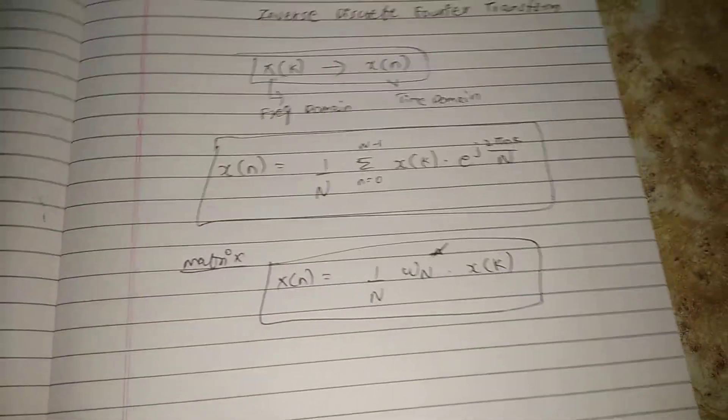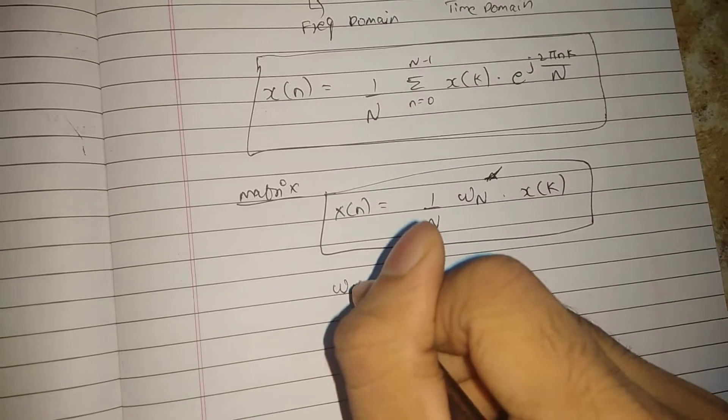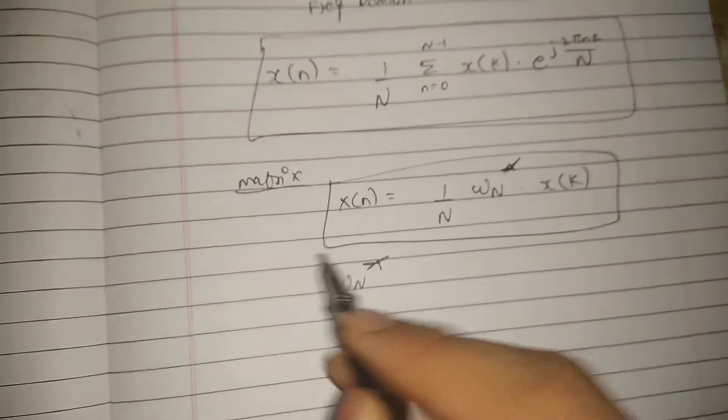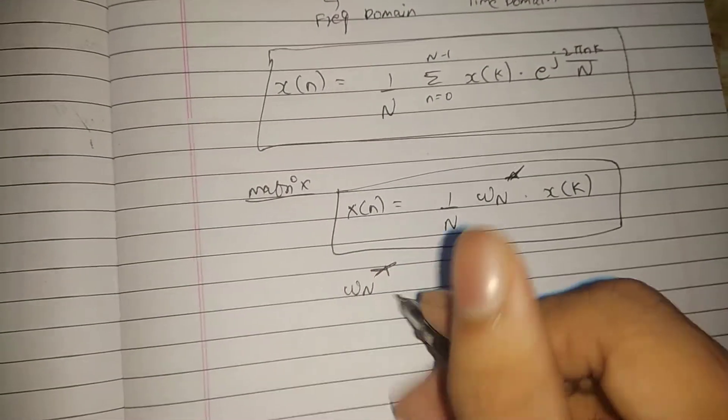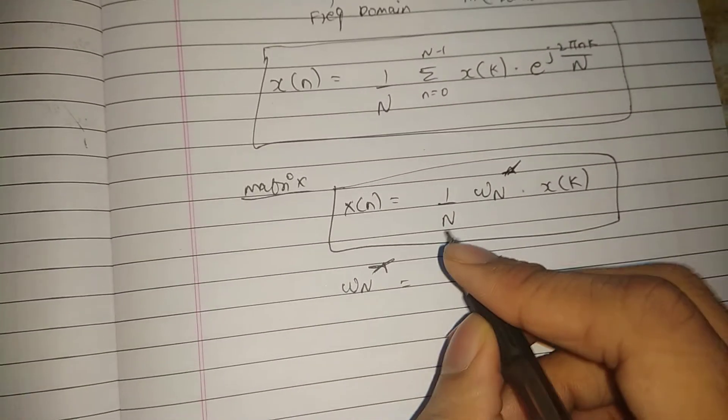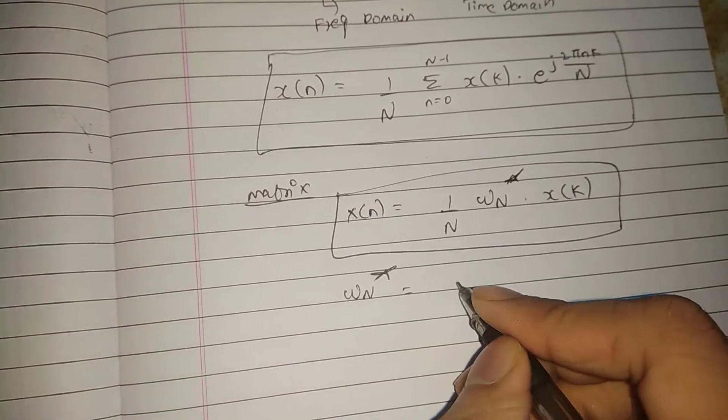Now what is omega N star? In DFT, we use omega N to calculate the matrix method. Similarly, in IDFT, we have omega N star, which is the complex conjugate of omega N.